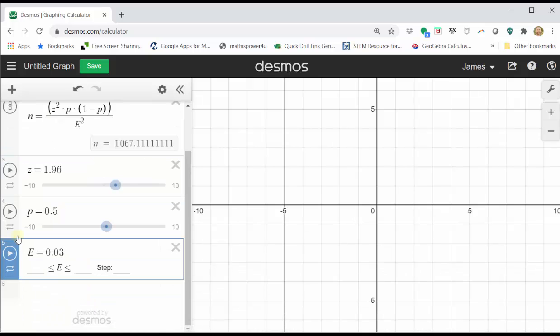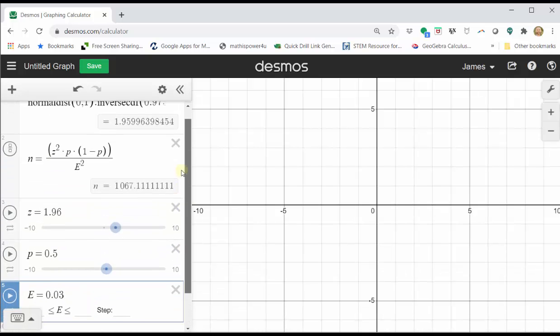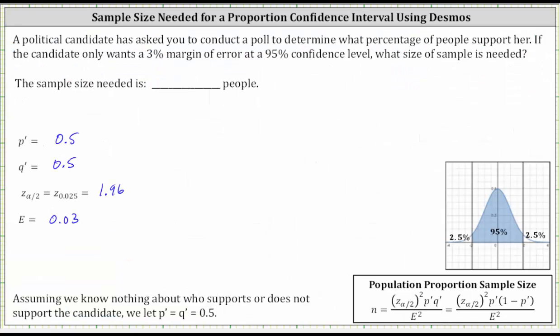Let's close the Desmos keypad, scroll up, and we can see N, we always round N up and not down. If we round it down to 1,067, the sample size would not be large enough, and therefore we round up to 1,068. Now we know the sample size needed is 1,068 people.